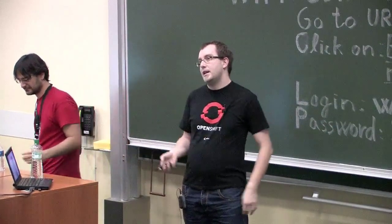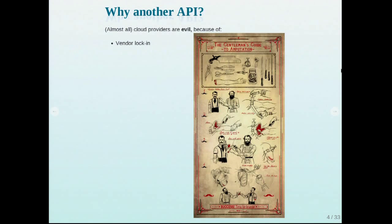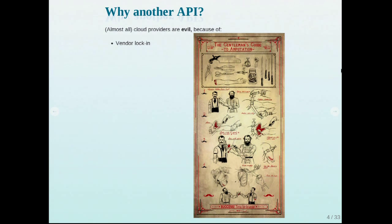Why another API? There are many APIs. First of all, all cloud providers are evil — they want to lock you in, they want to take your money. This is basically what the cloud business is about: make you use some cloud provider, you get addicted, all your infrastructure is built for that cloud provider, and then someone from management says we want to switch because it's very expensive, and all the developers need to rewrite all the code with a completely new API.